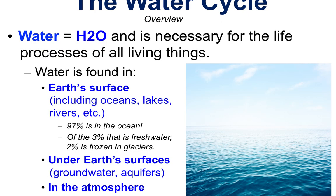Let's jump into one that I hope you're familiar with: the water cycle. The water cycle involves H2O — that's two hydrogens attached to an oxygen. Water is necessary for every living thing; all life on the planet uses water. We find it everywhere: on the Earth's surface like our oceans, our lakes, and even moving in rivers.